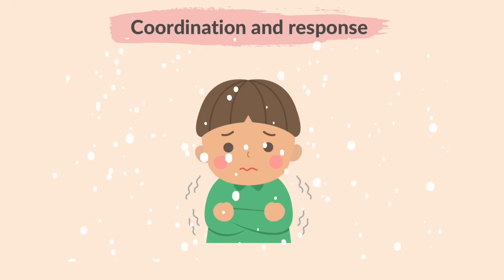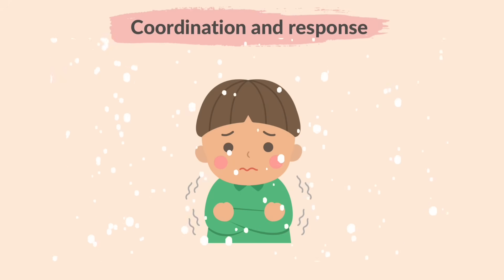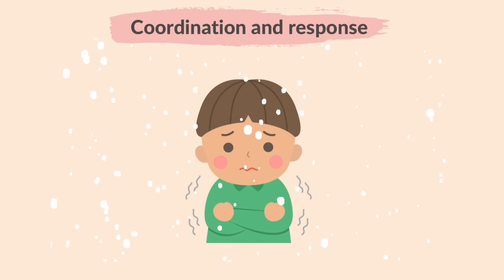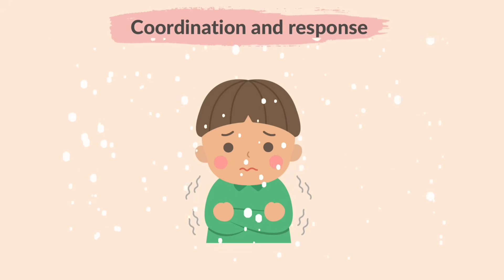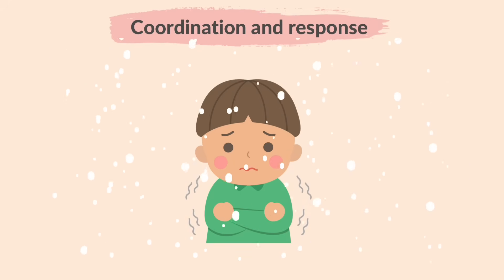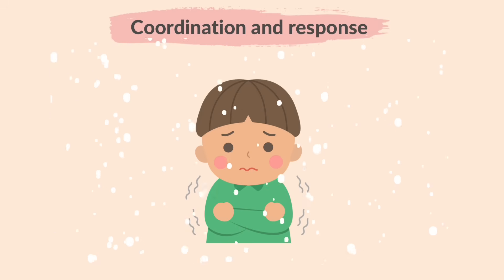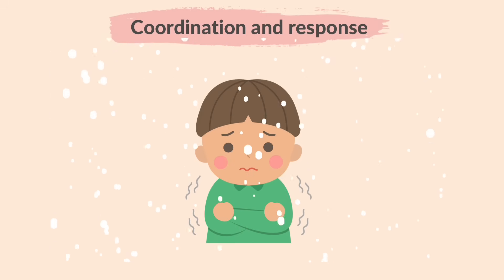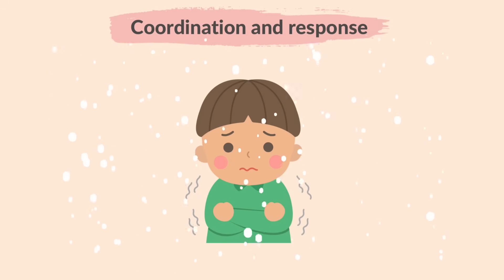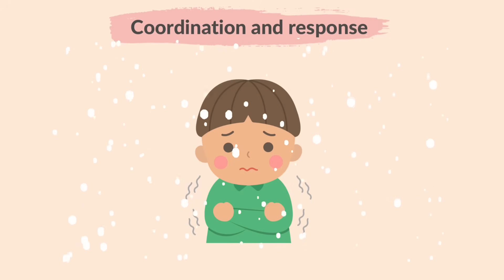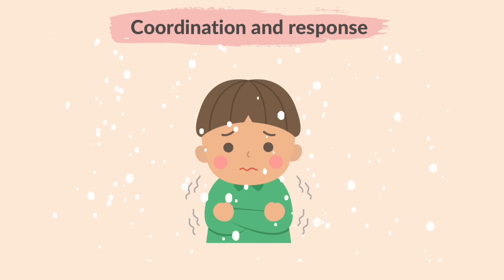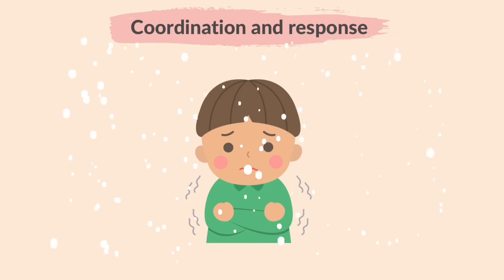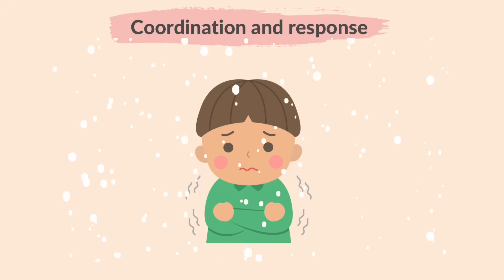For example, when you are exposed to cold temperatures, your neurons detect the drop in temperature and send a signal to your brain, which then triggers a response to generate heat through shivering to maintain your body temperature.